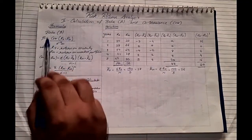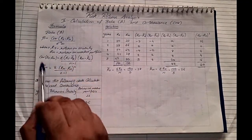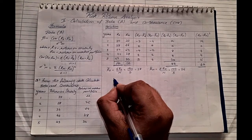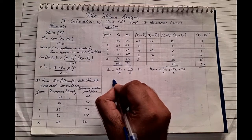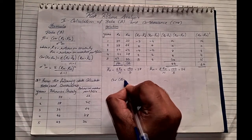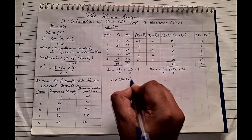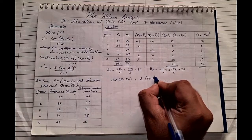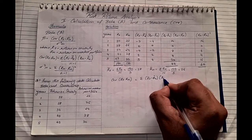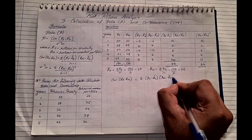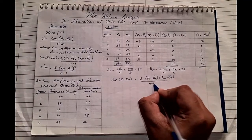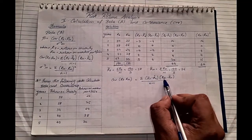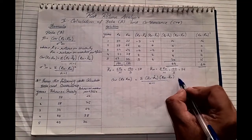Now we just apply the formulas. To find beta, we first need covariance since it is the numerator. The covariance formula is: summation of (rs minus r̄s) into (rm minus r̄m) upon n minus 1. The summation total is 44, and n minus 1 is 5 minus 1 equals 4, so covariance equals 44 divided by 4, which comes to 11.